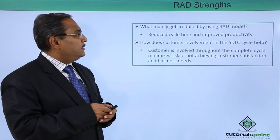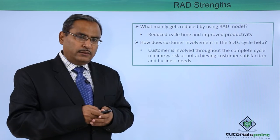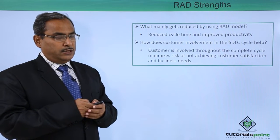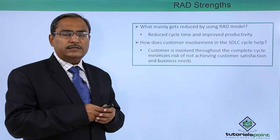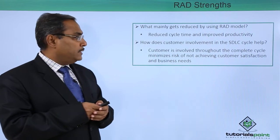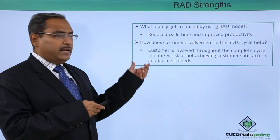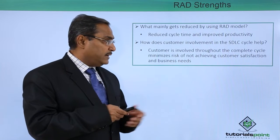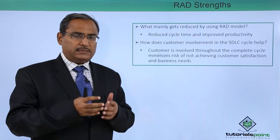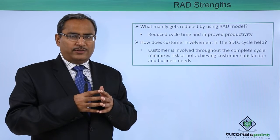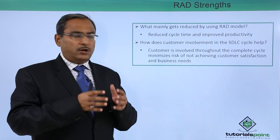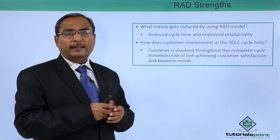Looking at RAD strengths: what mainly gets reduced by using the RAD model is the reduced cycle time and improved productivity, because multiple teams can work on components simultaneously. The customer is involved throughout the complete cycle, minimizing the risk of not achieving customer satisfaction and business needs. With continuous customer participation, the risk is very low that the final product will not be in accordance with customer expectations and business needs.